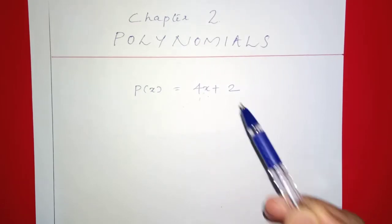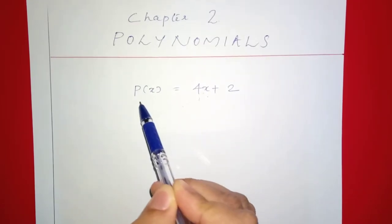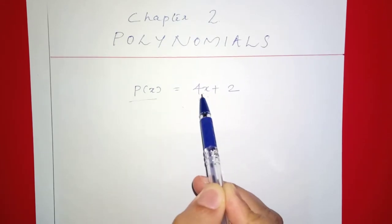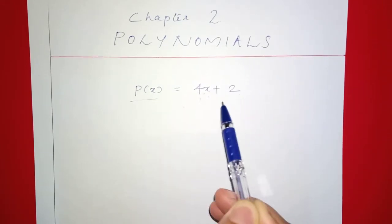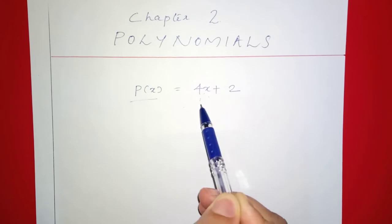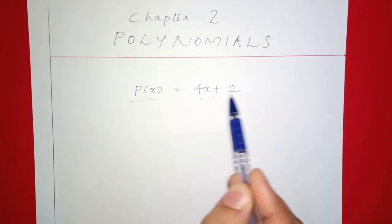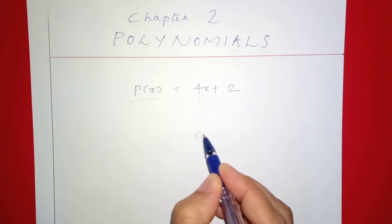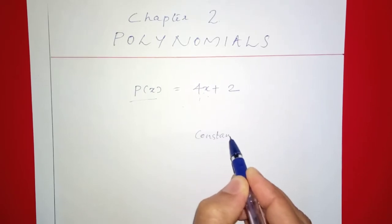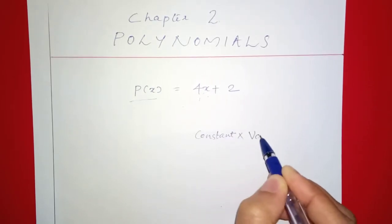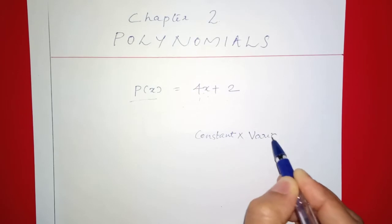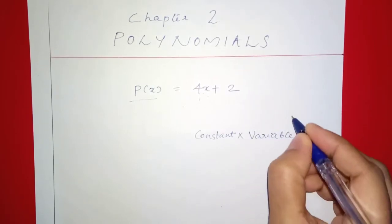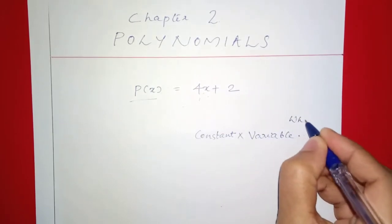We denote polynomials as a formula of p of x, q of x. Here is 4x squared. These are the terms of the polynomial. In this polynomial, we have a constant into variable. This is the form.